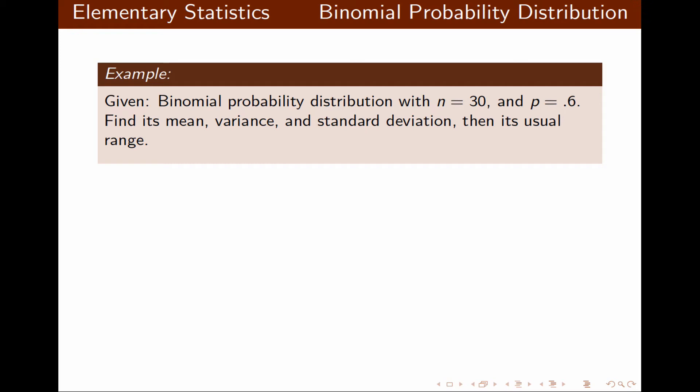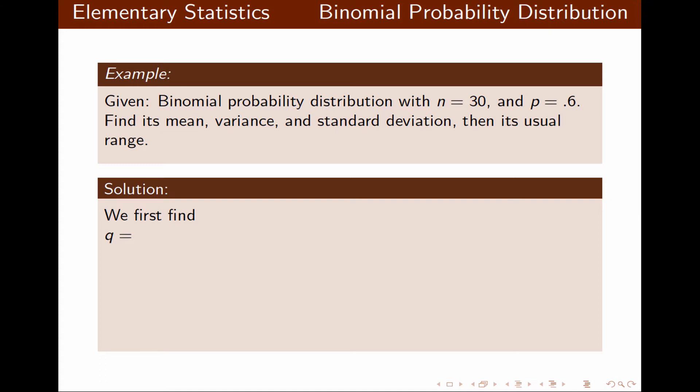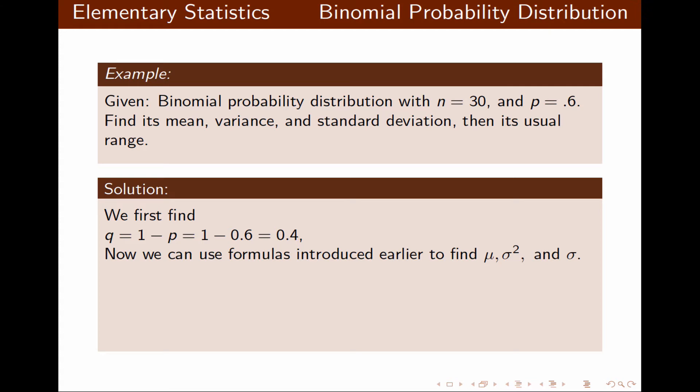In this example we're given a binomial probability distribution with n equal to 30 and P equal to 0.6. We want to find mean, variance, standard deviation, and the usual range. First we find Q: since P is 0.6, Q is 0.4. Using the formulas, mean is n times P, so the mean for this binomial probability distribution is 18.